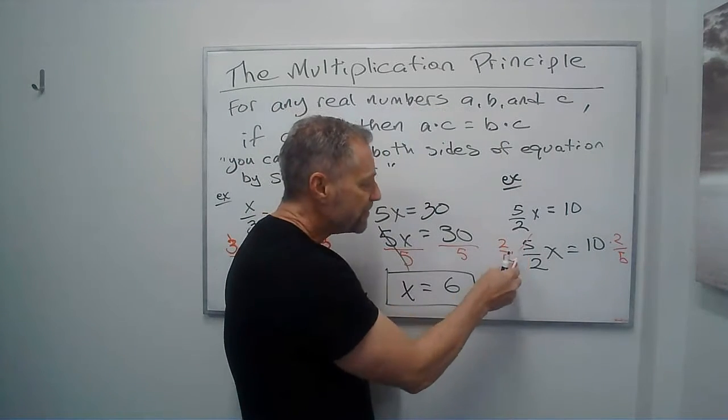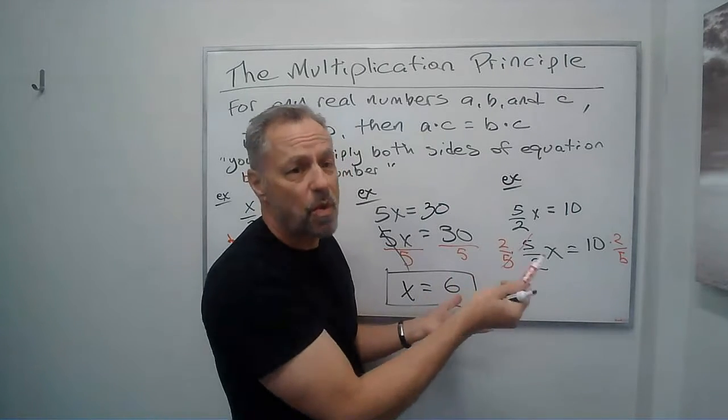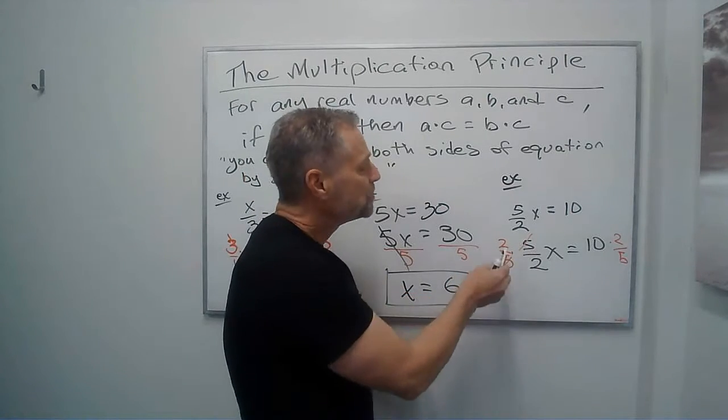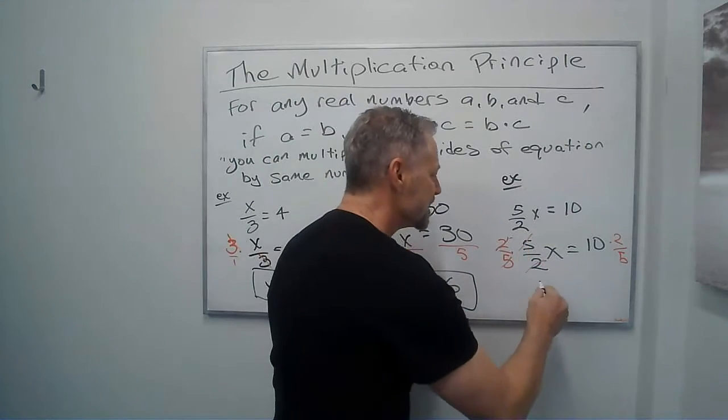And what happens here, the 5 over 5, that's a 1 that cancels or changes to a 1. It doesn't change things when I multiply. The 2 divided by 2 is also 1. I just get 1 times x. Again, that's just x.